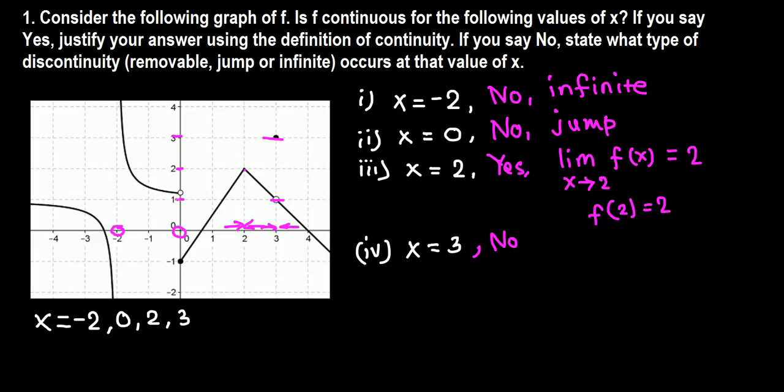The function is not continuous. This type of discontinuity is called removable, because if we redefine this function or move this dot back here, it would be continuous. So the name of discontinuity is removable.